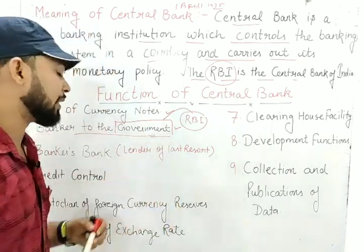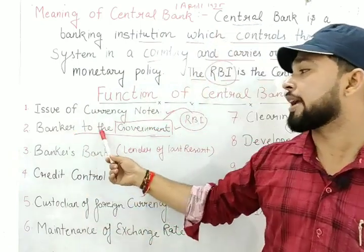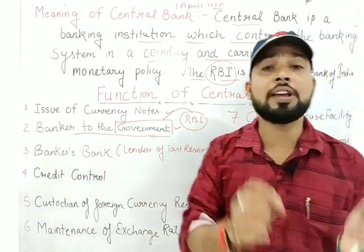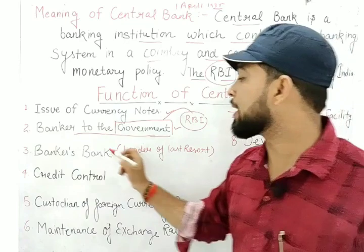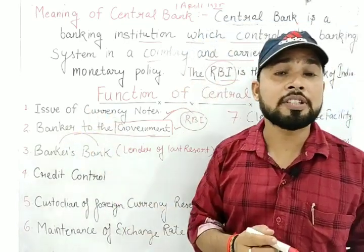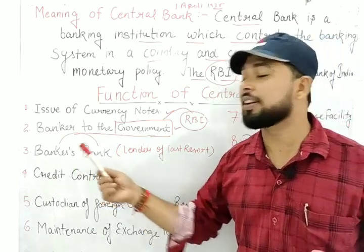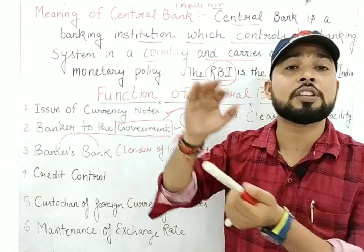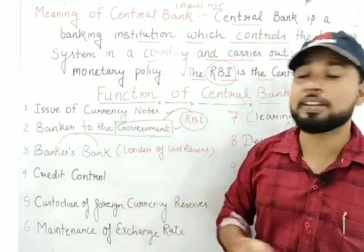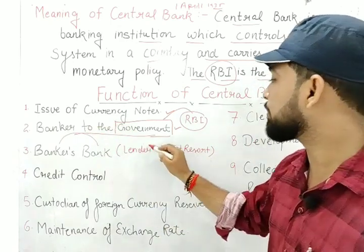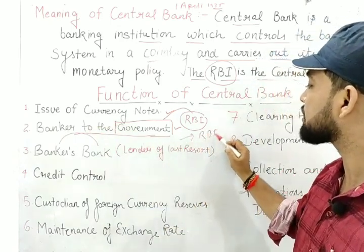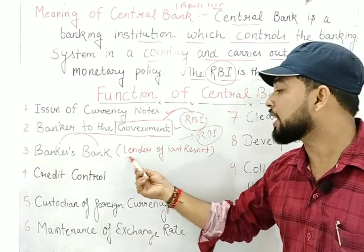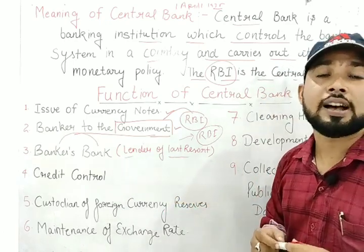The third function is banker's bank. RBI is the guardian of all commercial banks. RBI provides loans to commercial banks, and that is why RBI is also known as the lender of last resort.